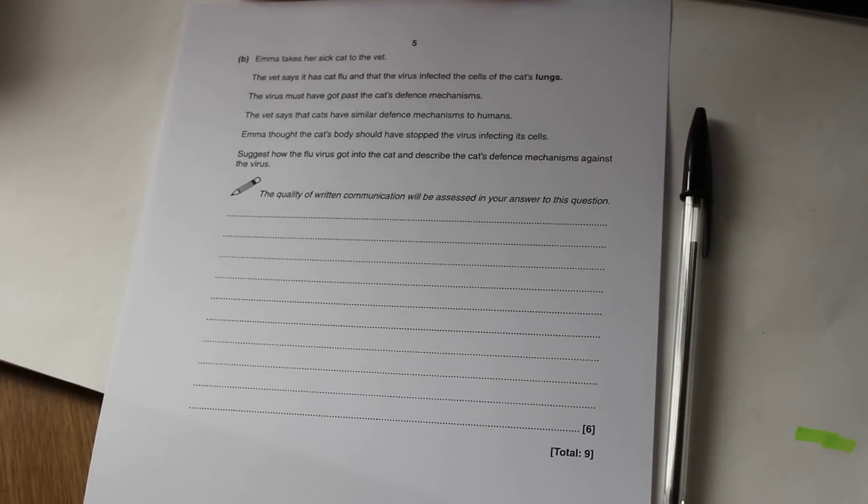So the first thing we really need to do here is identify the two things that we've got to talk about in our answer. And the key thing with these six mark questions is there are always going to be two things to talk about.